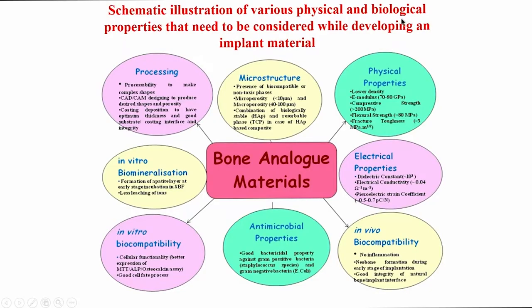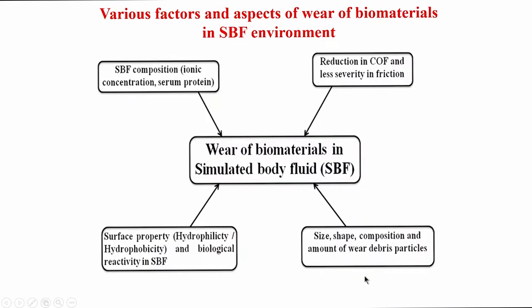Just to refresh your memory, these are the various physical and biological properties that need to be considered for an implant material: processability to make complex shapes, CAD/CAM designing to produce desired shapes and porosity, microstructure like micro porosity and macro porosity, physical properties such as lower density, elastic modulus, in vitro biomineralization, electrical properties, in vitro biocompatibility, antibacterial properties, and in vivo biocompatibility.